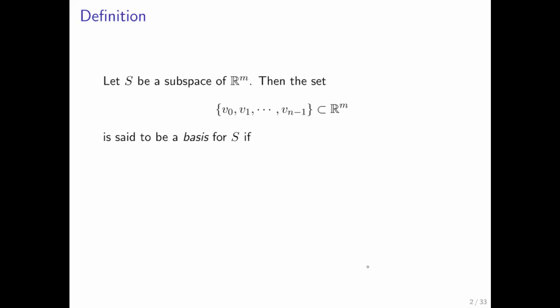What describes a basis for S? First of all, the vectors must be linearly independent. We saw that if the vectors were linearly dependent, then there was a vector that could be written as a linear combination of the other vectors, and we could throw it away. We didn't need it.